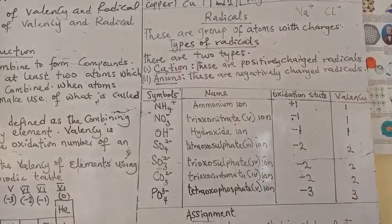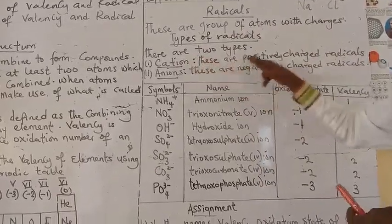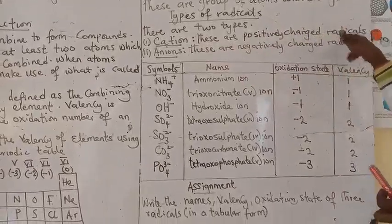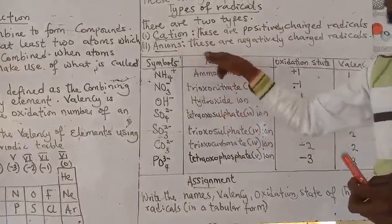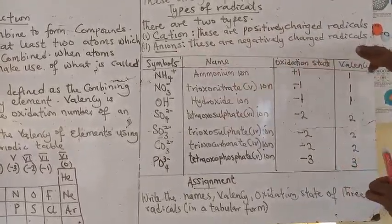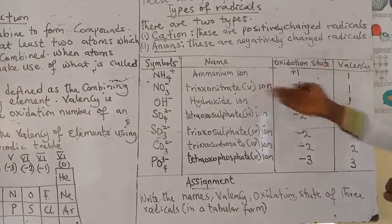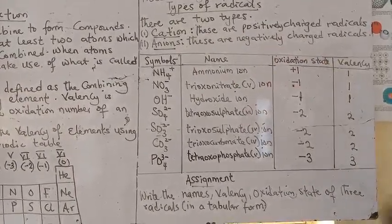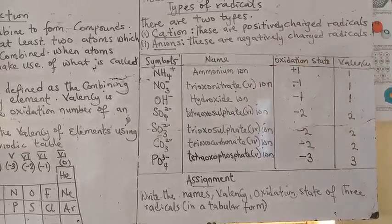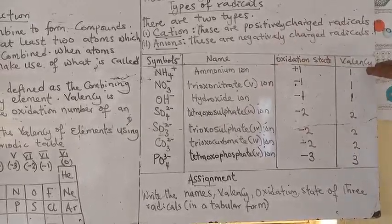There are two types of radicals. We have cation, these are positively charged radicals. And the second is anion, these are negatively charged radicals. On the board here, you would see examples of radicals, their names, oxidation states, and their valency.